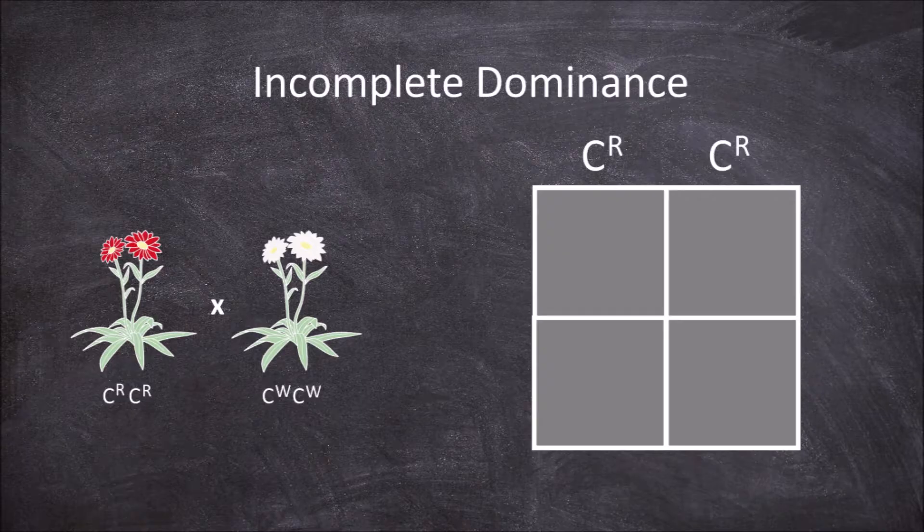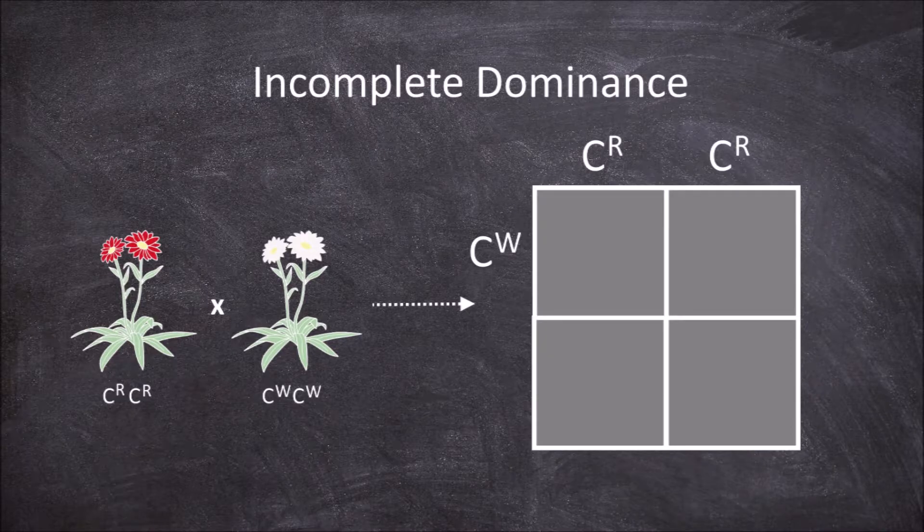Then we put each allele from the second parent along the side, so the first C^W next to the first square and the second C^W next to the second square.